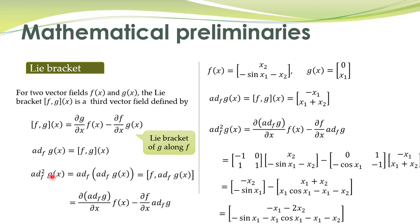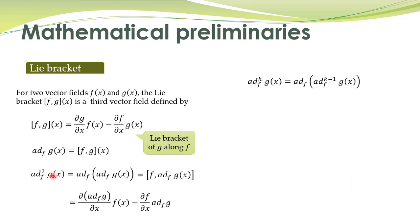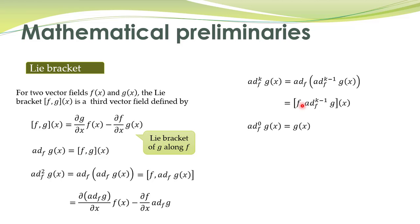This notation is useful when we have to repeatedly compute the Lie bracket. For example, we can also talk about the kth adjoint of g along f, which is equal to the adjoint of the k minus 1st adjoint of g along f, along f. This is by the extension of the same definition, and can also be written using the Lie bracket notation. The 0th adjoint of g along f is by definition equal to g of x itself.